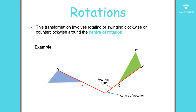Moving on to rotations. This transformation involves rotating clockwise or counterclockwise around the center of rotation — the center of rotation is the important part here, and it is indicated on the diagram. Here we have a 120-degree rotation. The original triangle is the blue triangle, and the green triangle is its image — it has been rotated 120 degrees around the center of rotation.